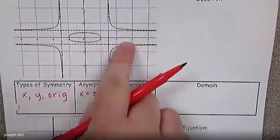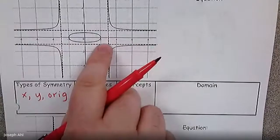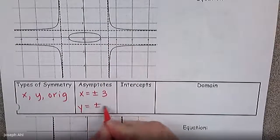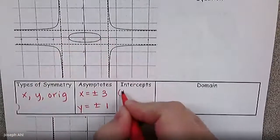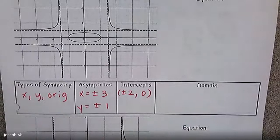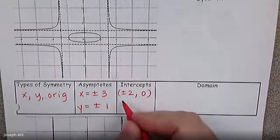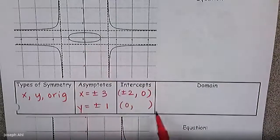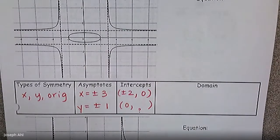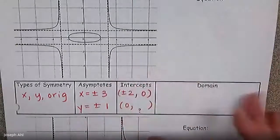It looks like we have horizontal asymptotes located at y equals plus or minus 1. For our intercepts, we definitely have x-intercepts at plus or minus 2, so I'll write those as plus or minus 2 comma 0. For the y-intercepts, I can see there's a positive and negative y-intercept, but I'm going to leave this blank for now. I'm not exactly sure whether they're at a half, three-fourths, or somewhere in between. We'll be able to confirm once we start building the equation.